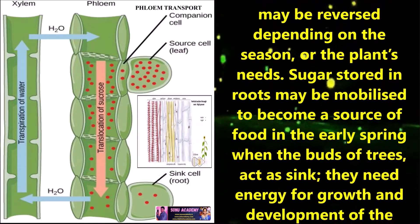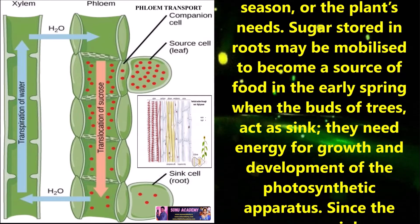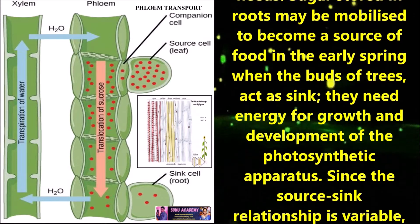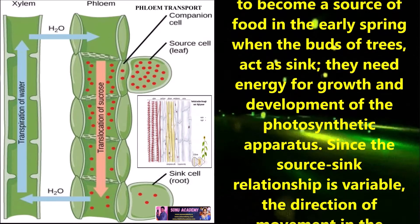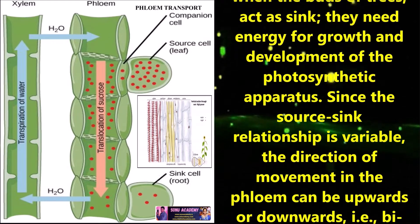Sugar stored in roots may be mobilized to become a source of food in the early spring when the buds of trees act as sink. They need energy for growth and development of the photosynthetic apparatus.